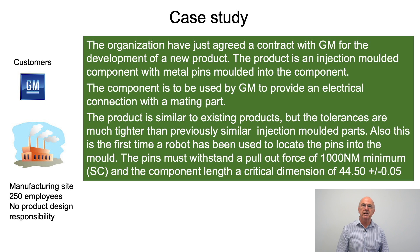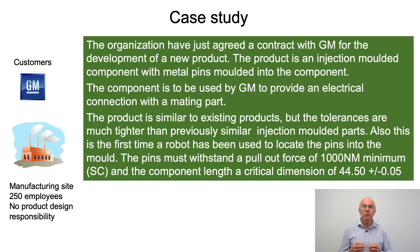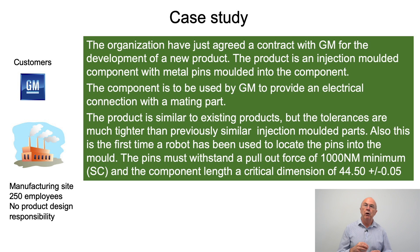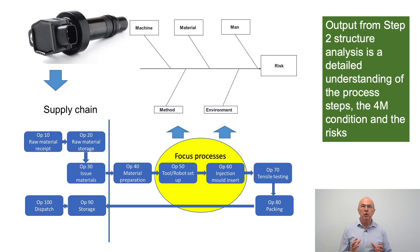Throughout this series on process FMEA we're working within the framework of the same case study. We're developing a new product for General Motors — an injection molded component with pins that will provide an electrical connection with a mated part. It's similar to other products we've made using injection molding, but this time a robot will be used to place the pins into the tool. Those pins have to withstand a particular pullout force, and there are also some very tight tolerances in terms of critical dimensions.